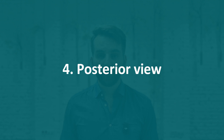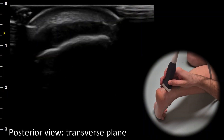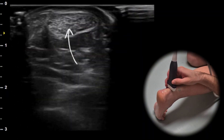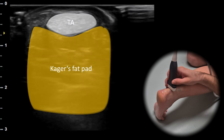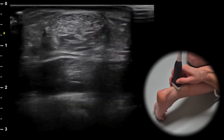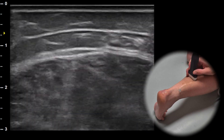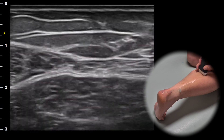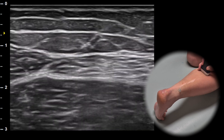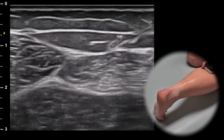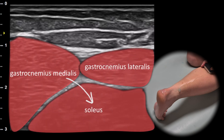The last view is the posterior view. In the transverse plane we can assess the Achilles tendon in its short axis. Below the Achilles tendon, Kager's fat pad is visible. As we follow the tendon proximally, we can identify the individual muscles of the triceps surae: the soleus, gastrocnemius medialis and gastrocnemius lateralis.